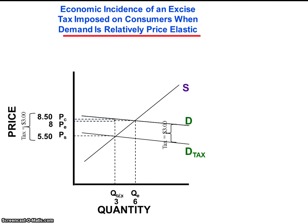We observe the two new effective price points. The effective price confronted by consumers, PC, is $8.50 in this example, and the effective price realized by sellers, P subscript S, is $5.50 here. The difference between P subscript C and P subscript S is $3, the amount of the tax.